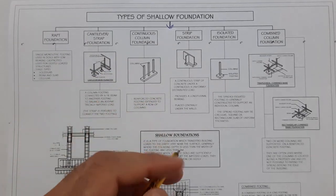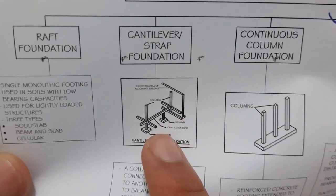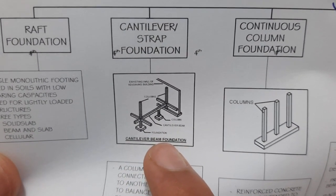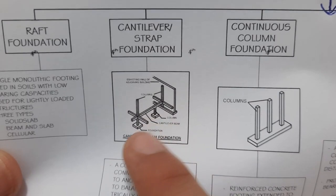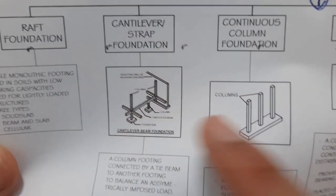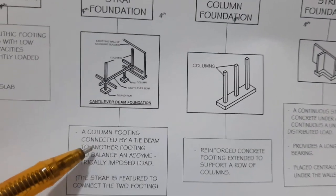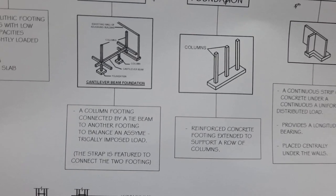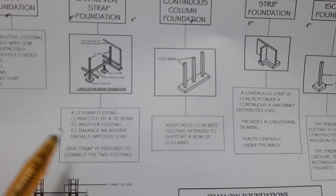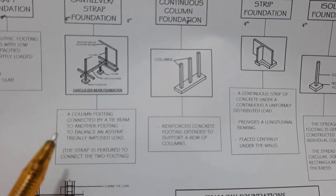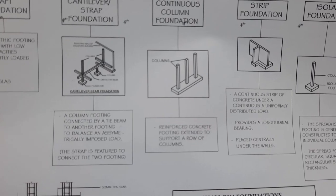The second type is cantilever strip footing. As you can see in the picture, this is cantilever beam foundation. At the bottom you can see the footing on one side and the other side — this is the cantilever footing. A column footing is connected by a tie beam to another footing, as you can see clearly.